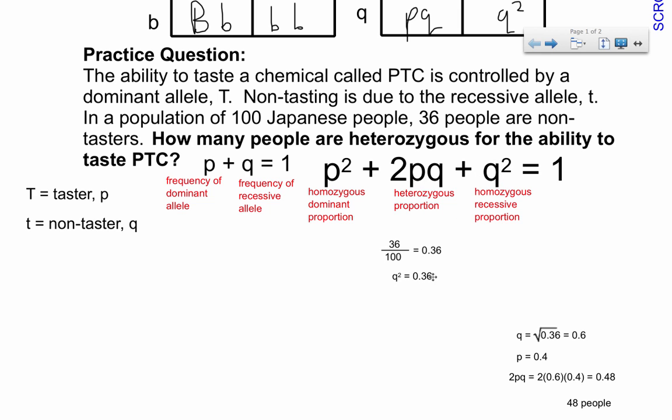So if Q squared is equal to 0.36, then I'm ready to go. Now, let's find out what the question is asking. The question asks, how many people are heterozygous for the ability to taste PTC? Heterozygous proportion would have to be 2PQ. So I really want to calculate 2PQ, and what I know is that Q squared equals 0.36. So now it's just a simple matter of calculating what P is and then filling it in into 2PQ.